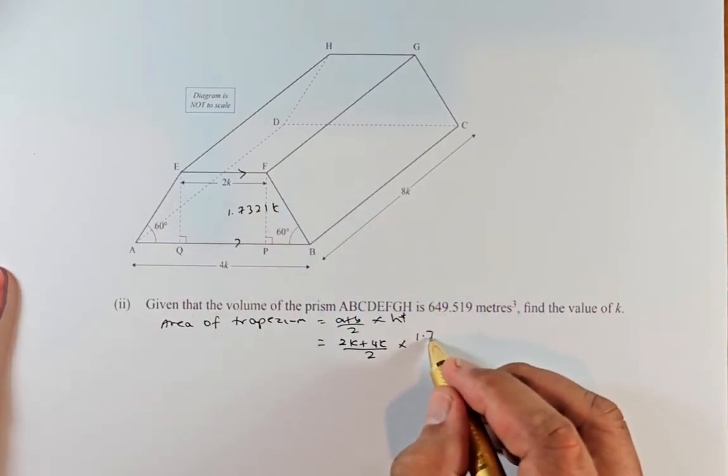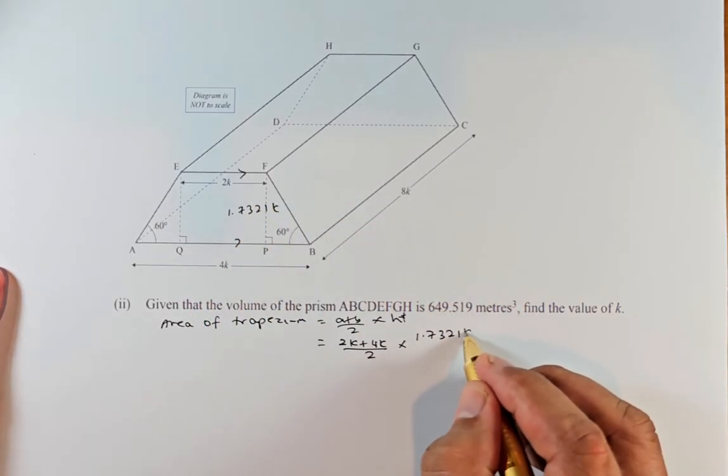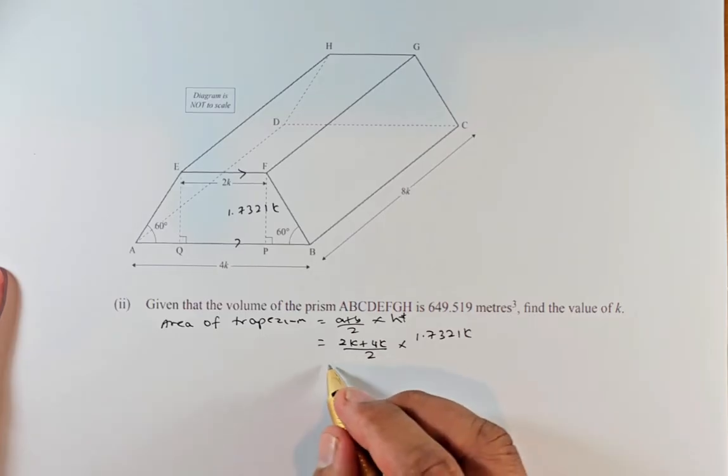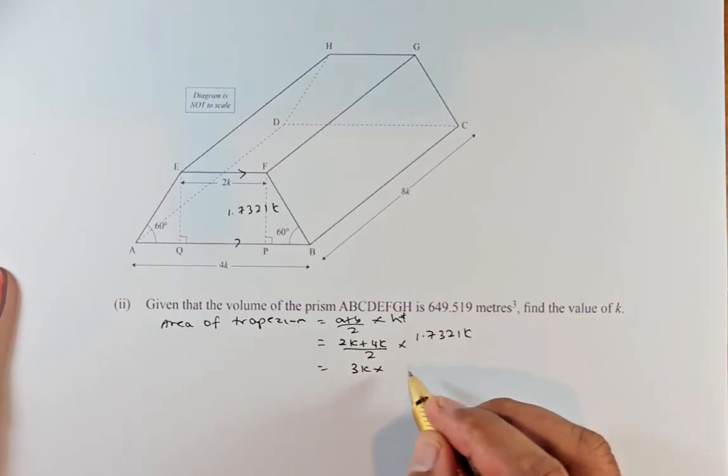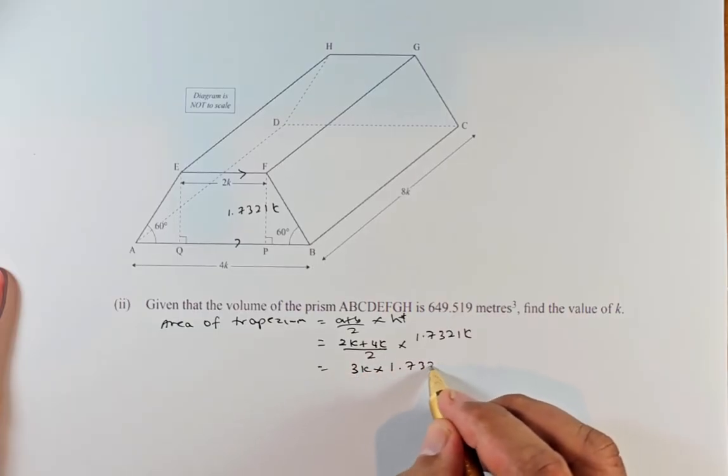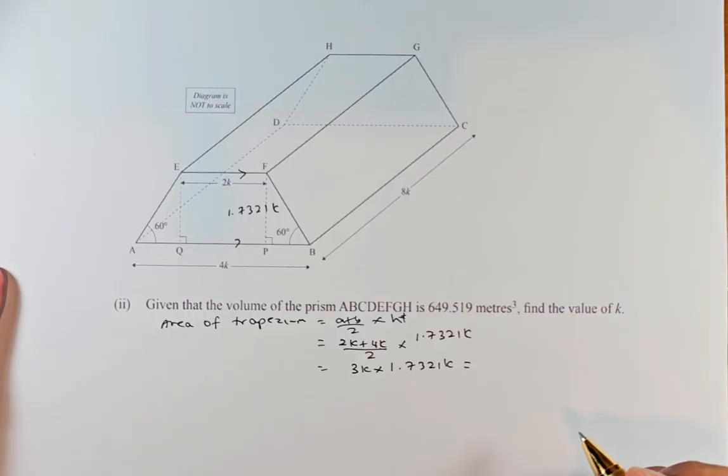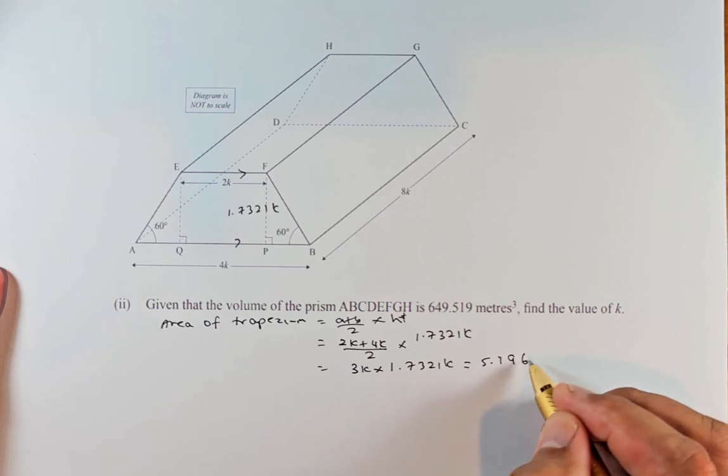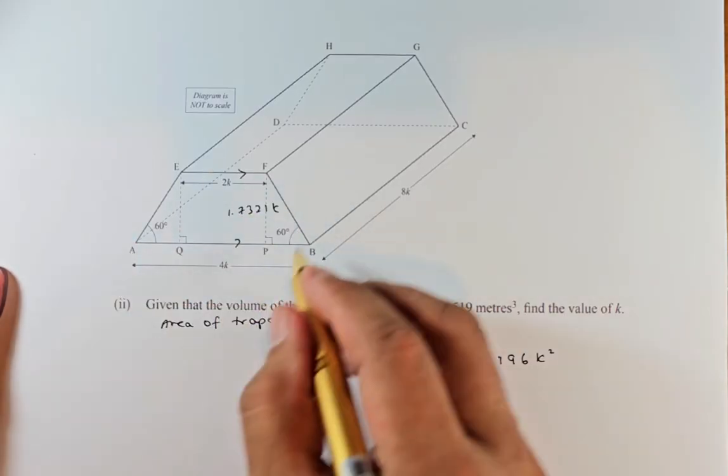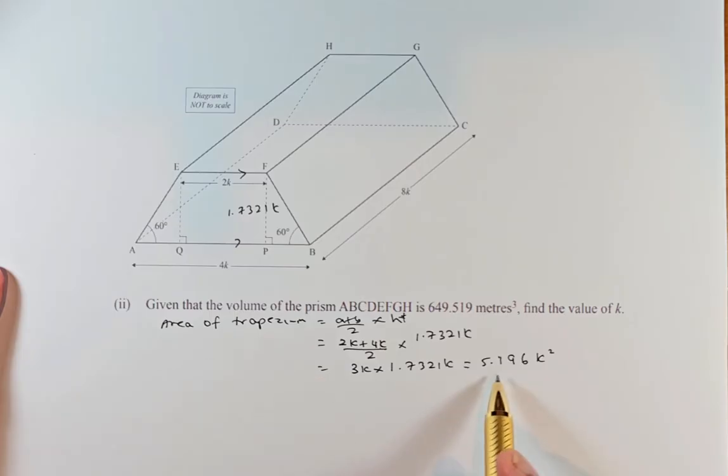Simplify that: 2k plus 4k is 6k divided by 2, so it's 3k times 1.7321k and the answer is going to be 5.196 k squared. I advise you not to put two equal signs but because I was running out of space I have to do that.